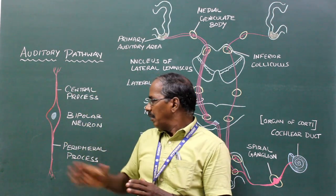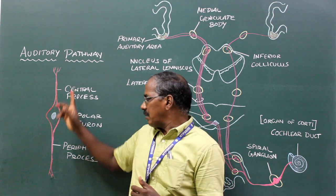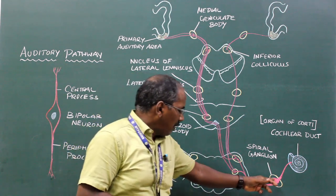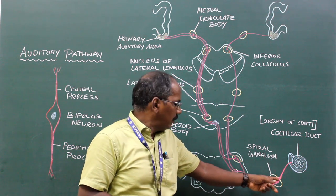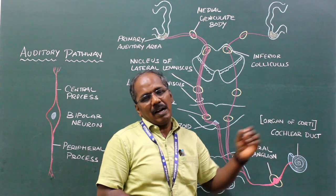They are bipolar neurons with a central process and a peripheral process. The peripheral process arising from the spiral ganglion reaches the organ of Corti.